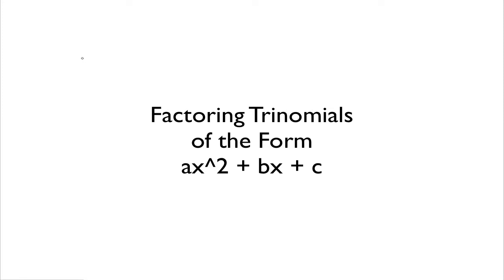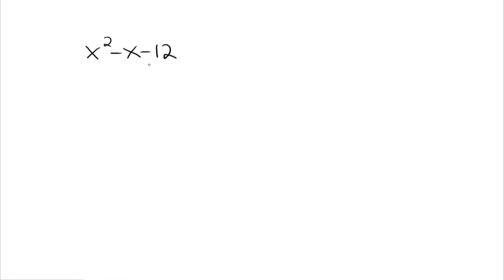Factoring an expression means to write it as a product of other expressions. For example, we had something like X squared minus X minus 12, and we factored that into X minus 4 times X plus 3. Those are called the factors of X squared minus X minus 12, and this is its factored form.